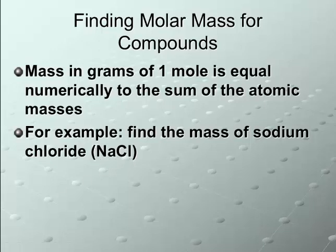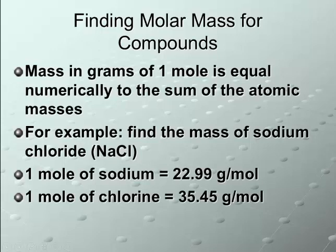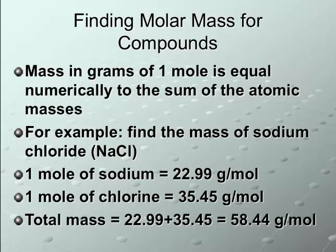So, we look at the masses of those two elements. So, one mole of sodium is 22.99 grams per mole. One mole of chlorine is 35.45 grams per mole. And, if we just add those up, we get a total of 58.44 grams per mole.